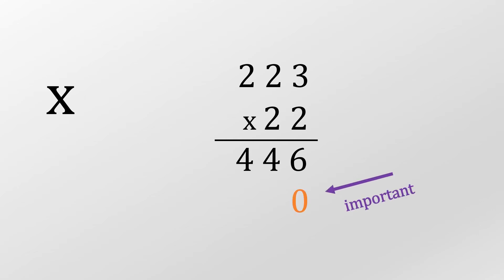Now this is the important bit. We add a zero double bubble on the second line before we do this calculation. Two times three is six, two times two is four, two times two again is four. So we write that down.